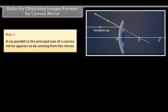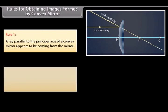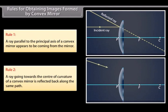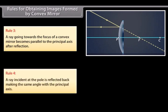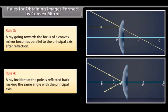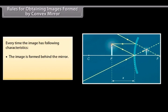Rules for obtaining images formed by convex mirrors. Rule 1: a ray parallel to the principal axis of a convex mirror appears to be coming from the focus behind the mirror. Rule 2: a ray going towards the center of curvature of a convex mirror is reflected back along the same path. Rule 3: a ray going towards the focus of a convex mirror becomes parallel to the principal axis after reflection. Rule 4: a ray incident at the pole is reflected back making the same angle with the principal axis. Every time, the image has the following characteristics: the image is formed behind the mirror; it is virtual and erect; and smaller than the object.